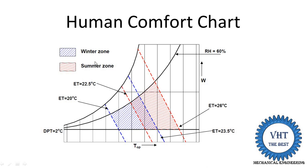Now focusing on the summer zone: the red colored line on the chart indicates the comfortable zone for human beings. This red line indicates an effective temperature of 22.5 degrees centigrade, and another red line indicates 26 degrees centigrade. The relative humidity range shown is from 30 to 60 percent. This red zone indicates the comfortable range for summer seasons.